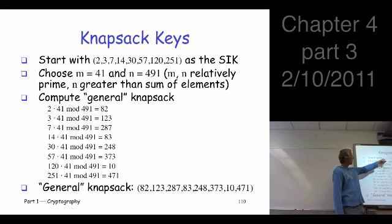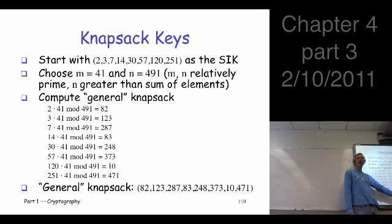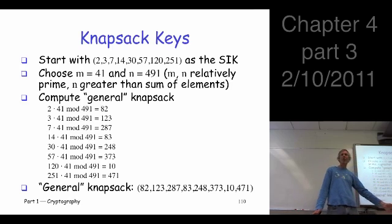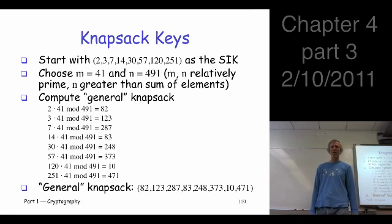We start with this super-increasing guy, and we just multiply each guy times M and reduce the result mod N. And that gives us a bunch of numbers here that look an awful lot like a general knapsack, right. They're certainly not super-increasing. It looks like the general case, just sort of a random set of numbers there.